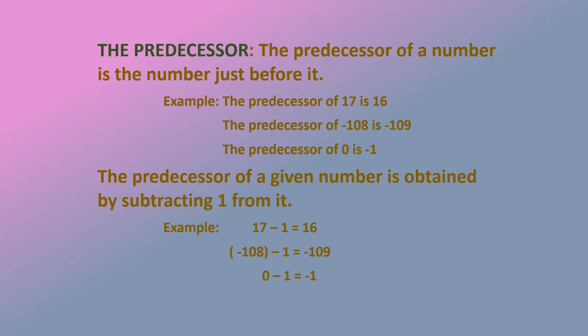The predecessor of a given number is just before the given number. For example, the predecessor of 17 is 16. One more example: the predecessor of –108 — here –108 is the given number, and –109 is just before it, so –109 is the predecessor of –108. Also, 0 is the given number and –1 is the predecessor of 0.